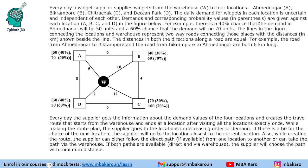This set from CAT 2022 Slot 2 DILR says that every day a widget supplier supplies widgets from the warehouse to four locations — A, B, C, and D. The daily demand for widgets in each location is uncertain and independent of each other. Demands and corresponding probability values are given against each location. For example, there is a 40% chance that the demand in Ahmednagar will be 50 units and a 60% chance that the demand will be 70 units.